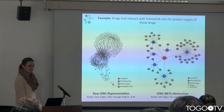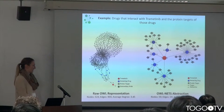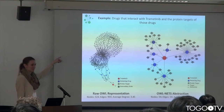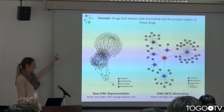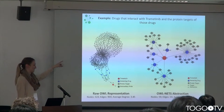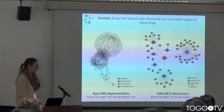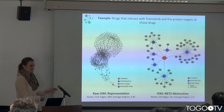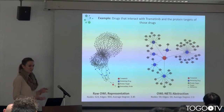Blue are the drugs that interact with trametinib. The gray nodes are the protein targets of those drugs. And then we're calling the intermediary nodes — the specific restrictions that you specify and the abstract classes needed to model these relationships — in green. And the NETS abstraction method only leaves you with the biological mechanisms.